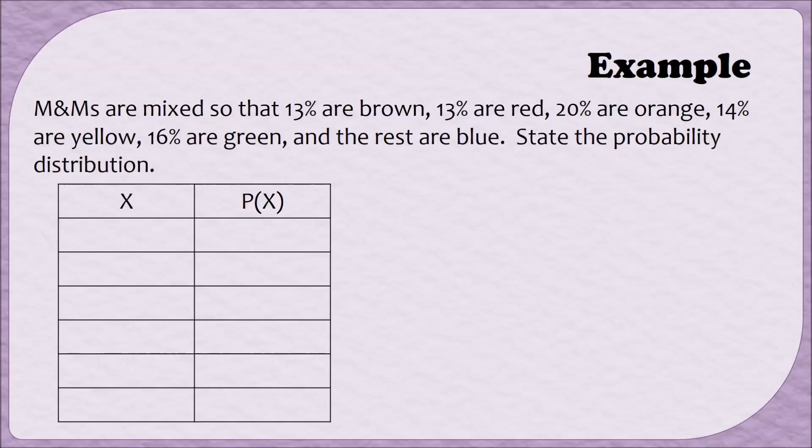In this example, the events are the different colors of the M&Ms. So you can list the colors in any order, I'm just going to list them in the order that they came. So the first color is brown, followed by red, orange, yellow, green, and blue.